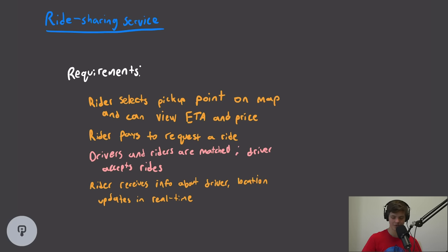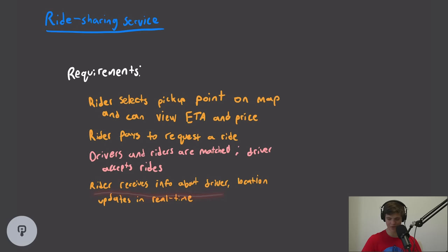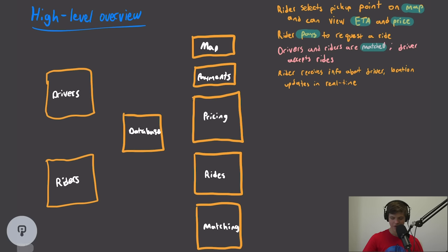Once they're ready to call the ride, they need to be able to pay. The rider needs to be able to be matched to a driver, and then the driver needs to be able to accept the ride. Finally, the rider needs to receive information about the driver, such as the type of their car so they can recognize them, and the driver's location needs to be sent to the rider in real time.